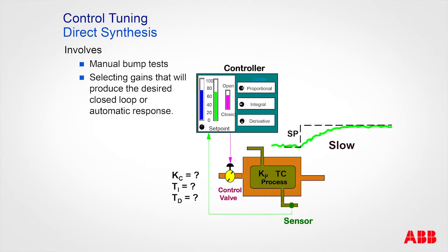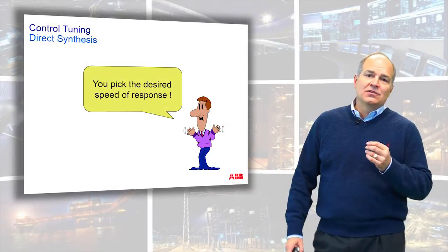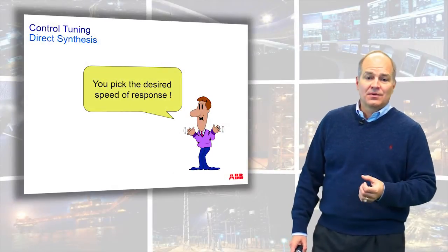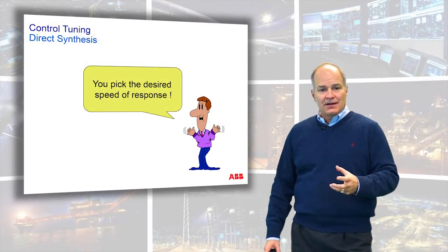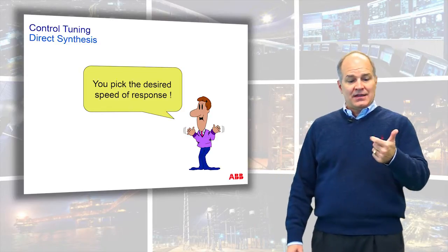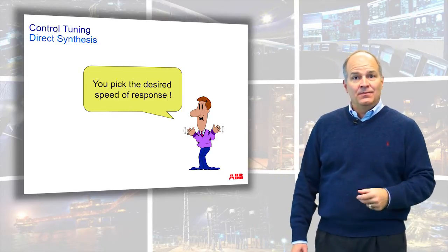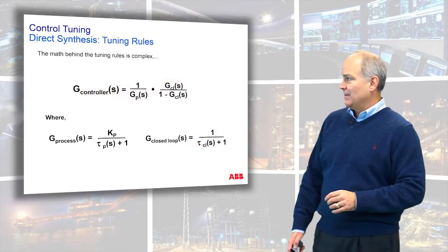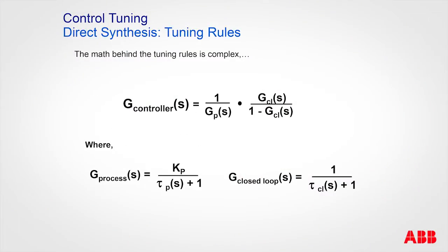The nice thing is you get to identify the speed of response. We're going to introduce a new term called tau ratio — it's like a knob that lets you decide whether you want fast, medium, or slow. The math has a theoretical background behind the tuning rules, but we're not going to spend a lot of time on it.